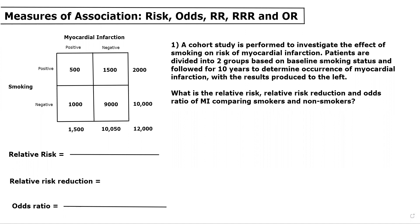So in this case, a cohort study is performed to investigate the effect of smoking on risk of myocardial infarction. Patients are divided into two groups based on baseline smoking status and followed for 10 years to determine occurrence of myocardial infarction, with the results produced to the left. As usual, disease status is along the columns, smoking status or exposure status is along the rows. And we're asked: what is the relative risk, relative risk reduction, and odds ratio of MI comparing smokers and non-smokers?